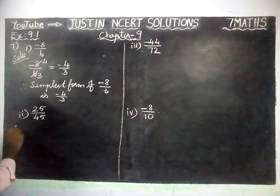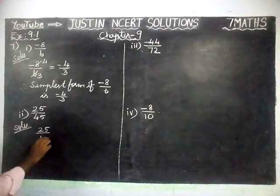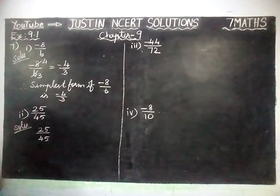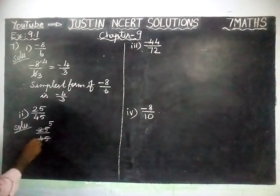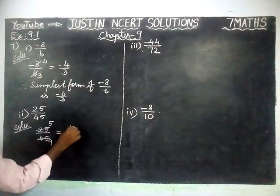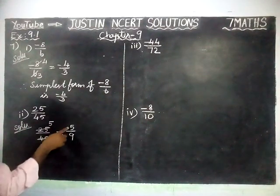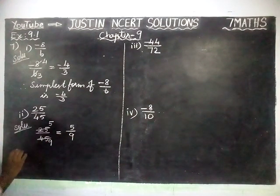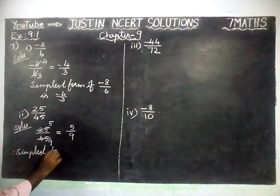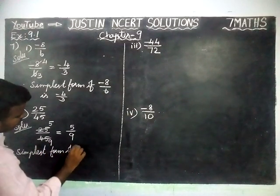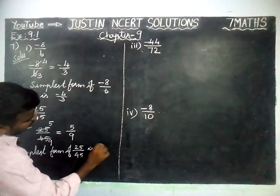Next, second question solution: 25 divided by 45. Here both numbers are ending with 5, so we can divide it by 5. 5 fives are 25, 9 fives are 45. So, 5 by 9. Hereafter we cannot simplify by a common divisor. Therefore, the simplest form of 25 by 45 is 5 by 9.